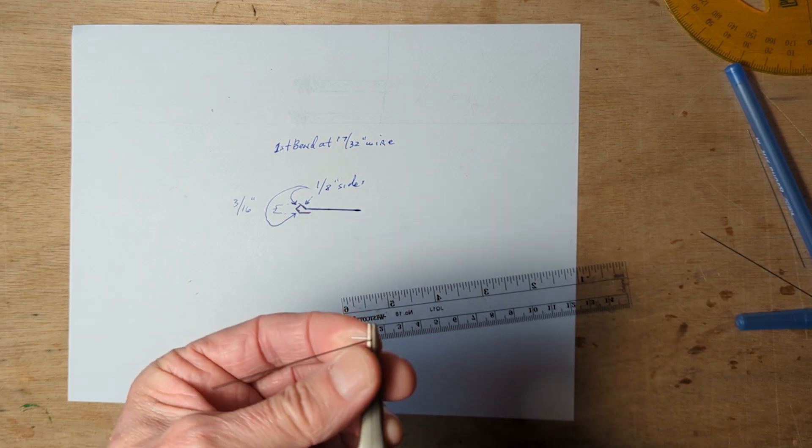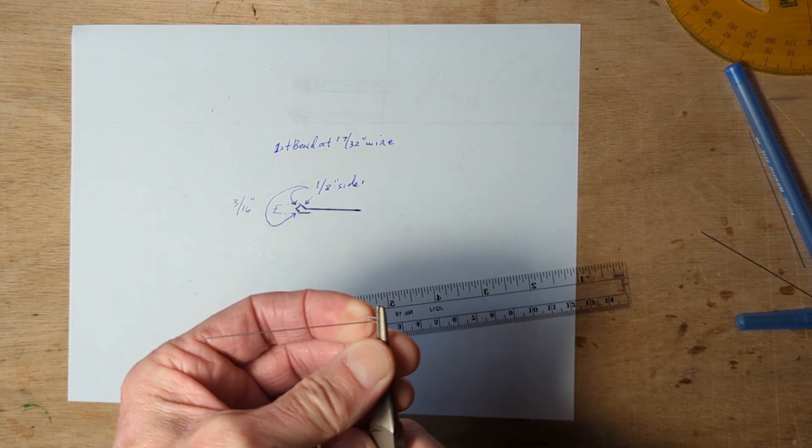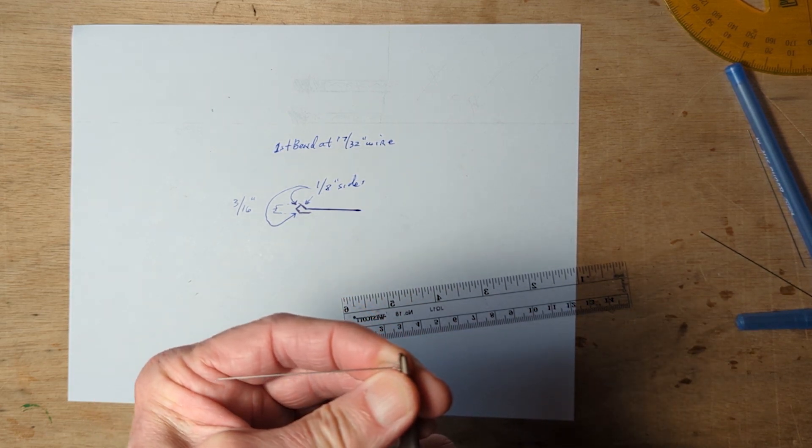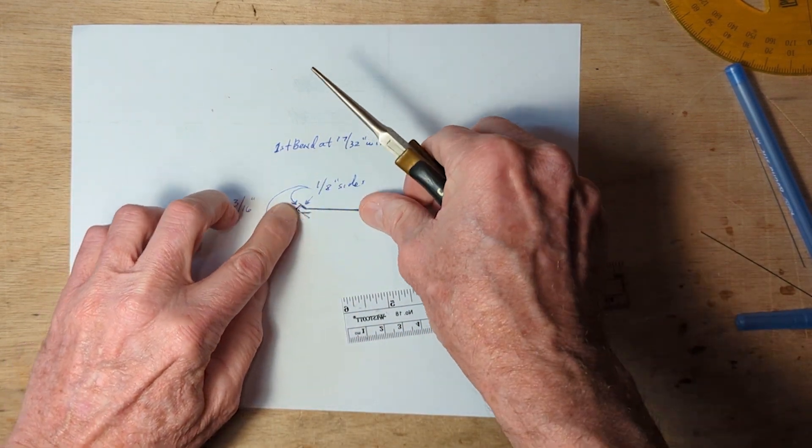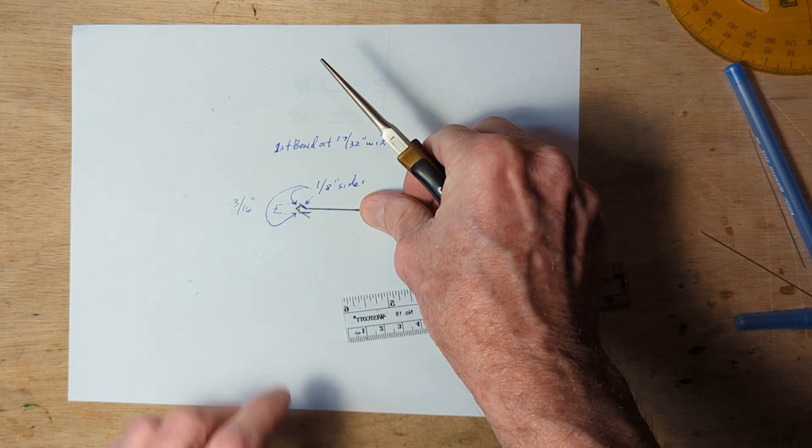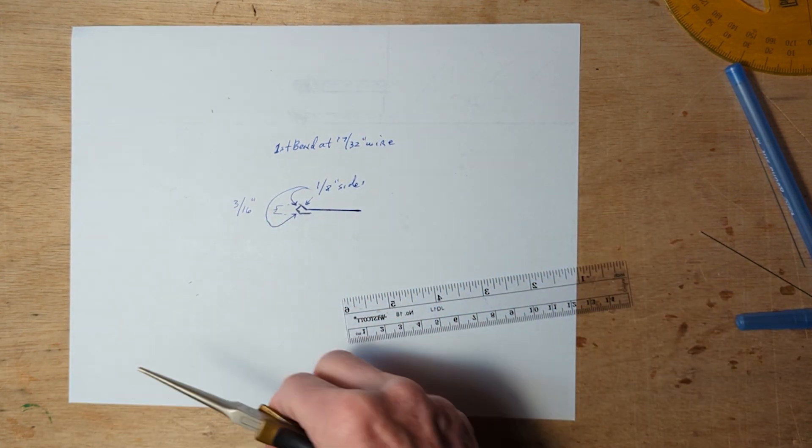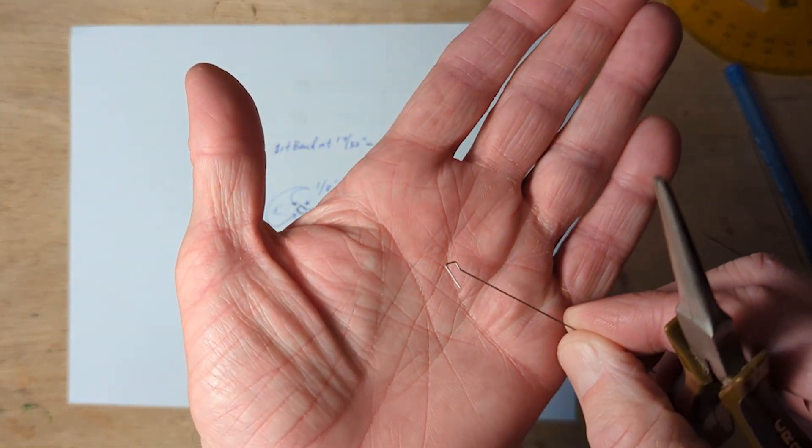The remainder of the bend is going to be done with the plier jaws not quite all the way to the end. There's the third bend. Hold it up to the diagram. Looks good. This is what it looks like at that point.